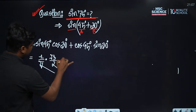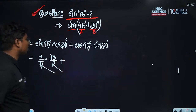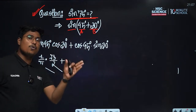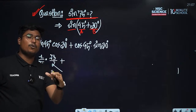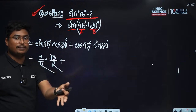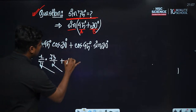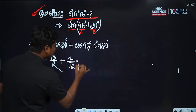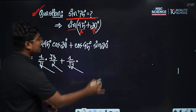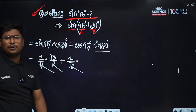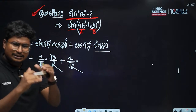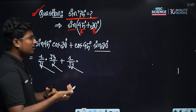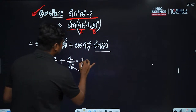We need to do cos 45° = 1 divided by root 2. And sin 30° = 1 divided by 2. So we need to compute: (1/√2) × (√3/2) plus (1/√2) × (1/2). Ultimately we get: root 3 over (2 root 2) plus 1 over (2 root 2).